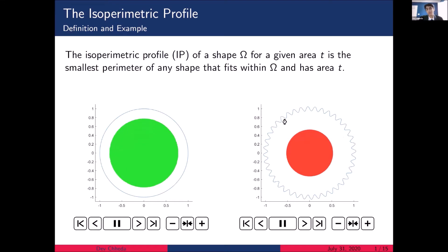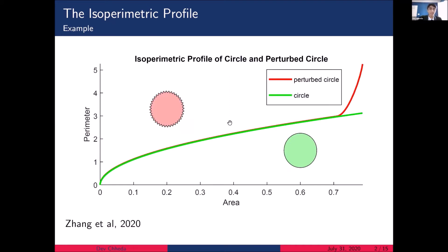And on the right, with the perturbed circle, you'll see that at the lower area values, the smallest perimeter shape is also just a circle, but at those higher area values the profile has to account for the perturbations along the boundary. And so the perimeter is going to increase. You can see the same difference if you plot out the profiles of the circle and perturbed circle. Once again, they're nearly identical and they only differ at the higher area values. And so this is something we're really interested in because this means that the profile is fairly resistant to perturbations along the boundary of shape.